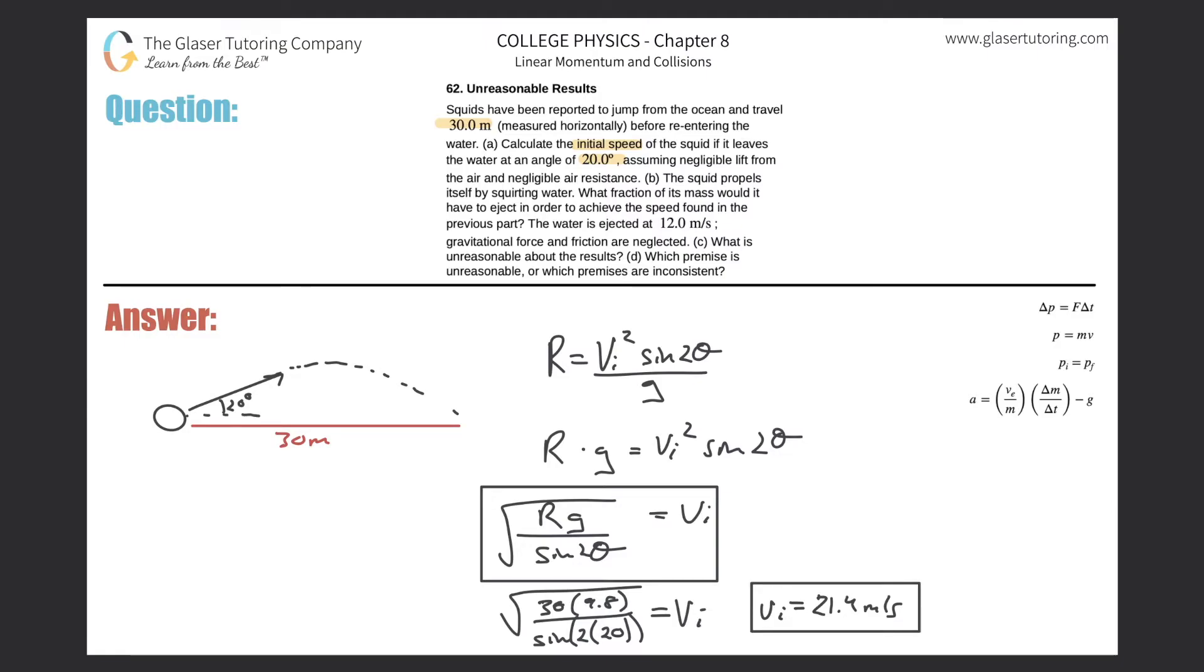Let's move on now to letter B. The squid propels itself by squirting water. What fraction of its mass would it have to eject in order to achieve the speed found in the previous part? The water is ejected at 12 meters per second and gravitational force and friction are neglected.